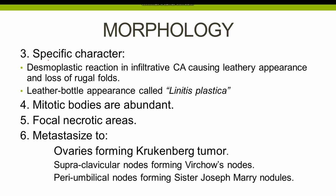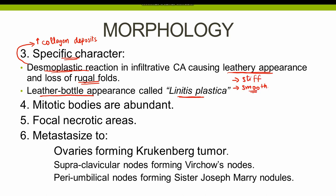The specific character of infiltrative tumors is that they initiate a desmoplastic reaction, meaning there is increased collagen deposition. This excessive collagen deposition results in the loss of gastric rugal folds, giving the wall of the stomach a leathery appearance known as leather bottle appearance or linitis plastica. In linitis plastica, the stomach wall becomes stiff and smooth because of loss of rugal folds. The fourth feature is the presence of abundant mitotic bodies, and focal necrosis is the hallmark of malignancy.